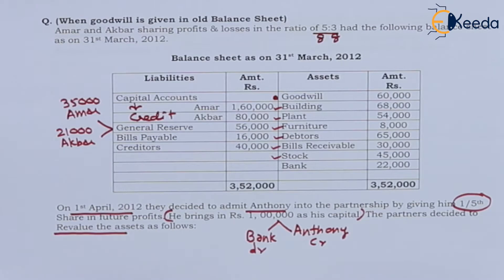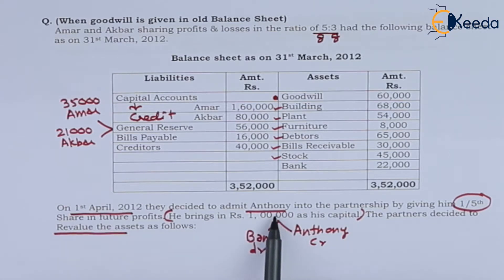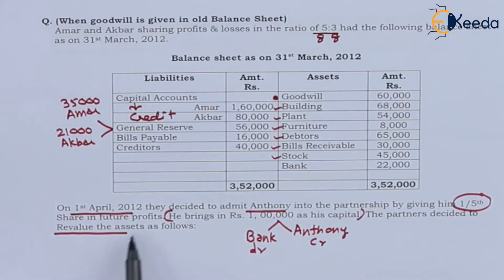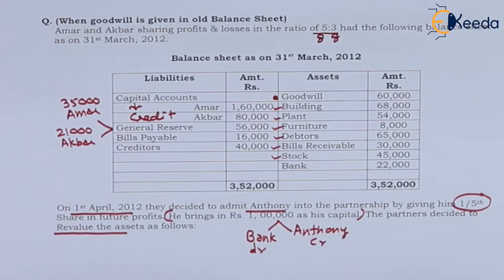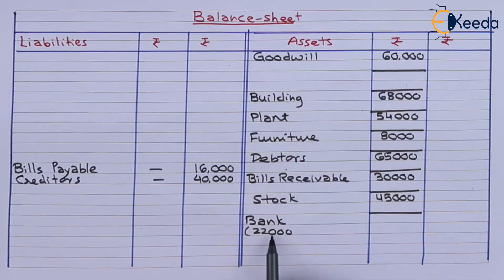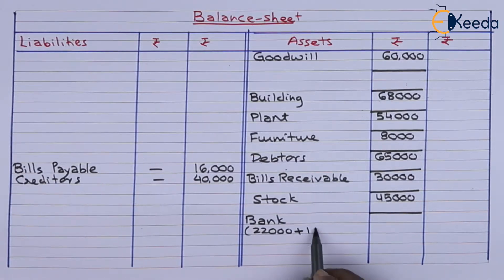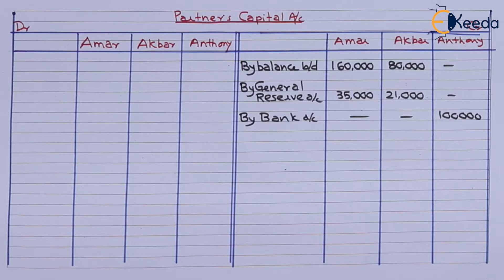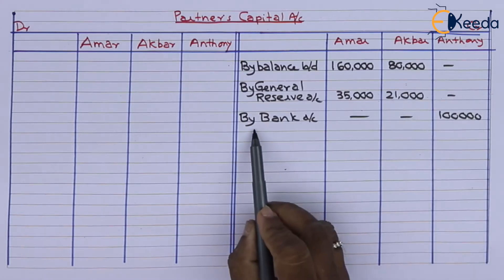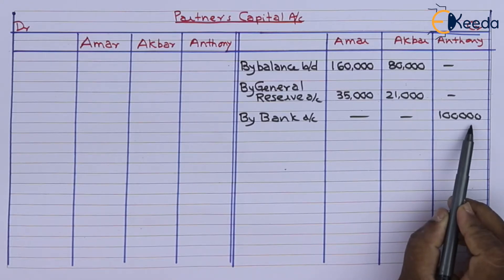Let us start with the adjustments. On 1st April 2012, they decided to admit Anthony into partnership, giving him one-fifth share. He brings 1 lakh as his capital. So 1 lakh is received — one effect will be in bank account. Opening bank balance is 22,000, and we add 1 lakh received from Anthony towards his capital. In Anthony's capital account credit side by bank, amount received 1,00,000.